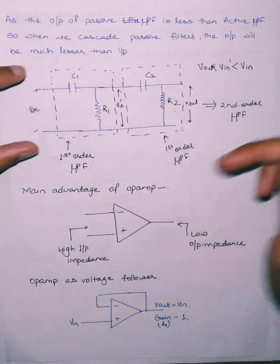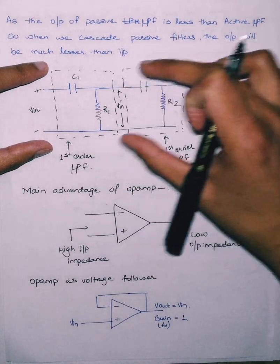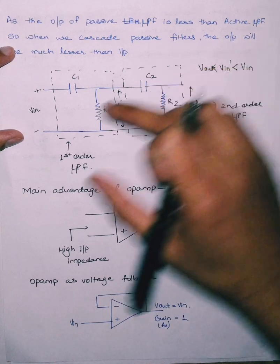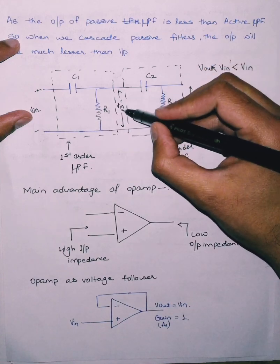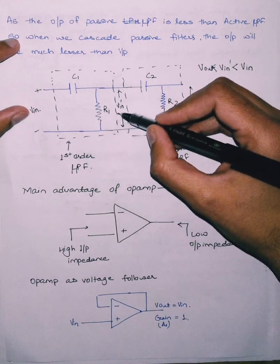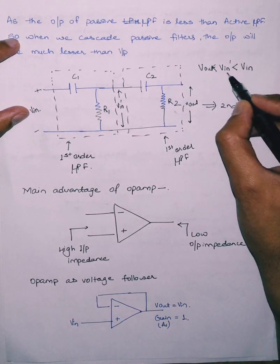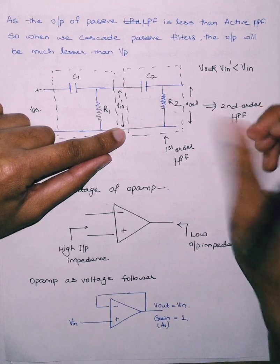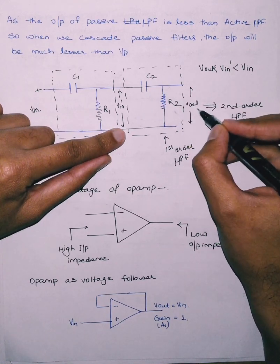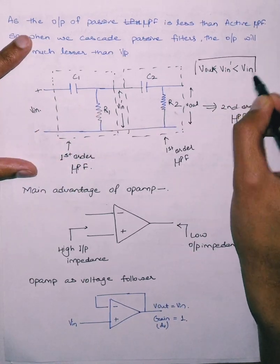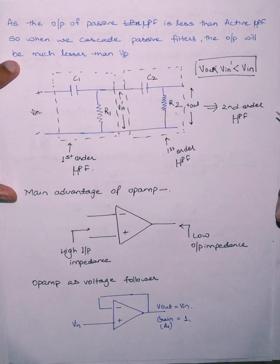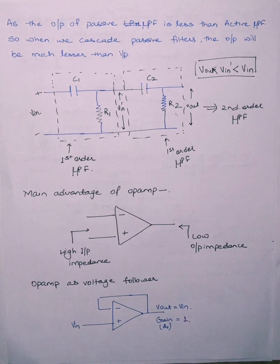When we cascade such systems to get a second order high pass filter by cascading two first order high pass filters, we get an output Vout which will be less than Vin. The intermediate voltage Vin' — the output of the first order high pass filter — will be less than Vin. And the output Vout at resistor R2 will be less than Vin', so Vout will be very much less than Vin. In the case of active filters, this attenuation is compensated by the high gain of the active component.